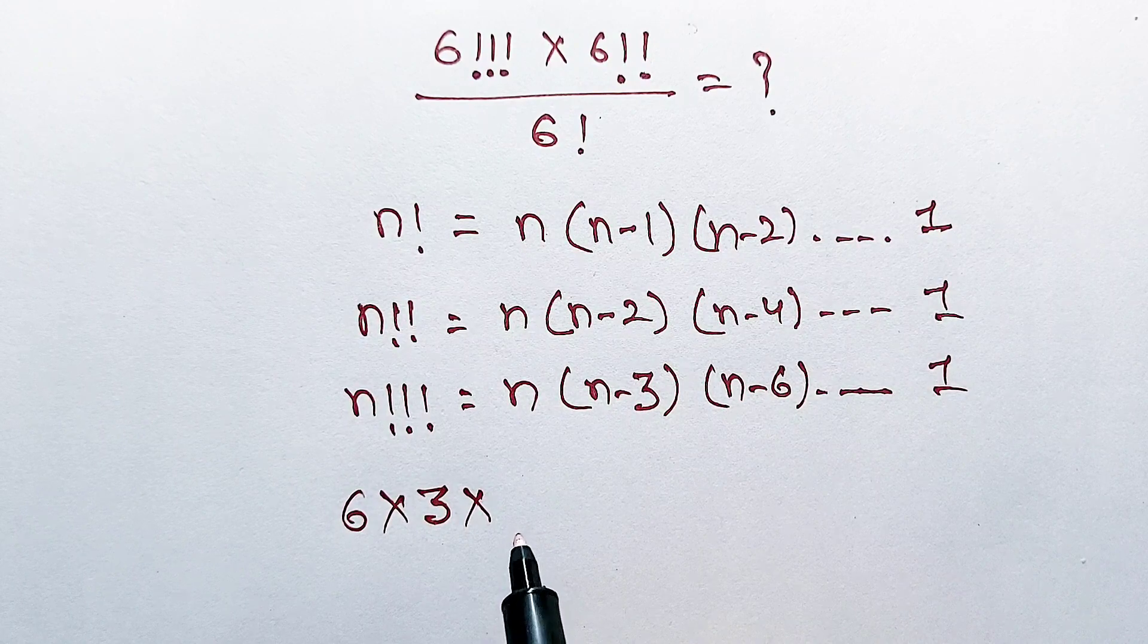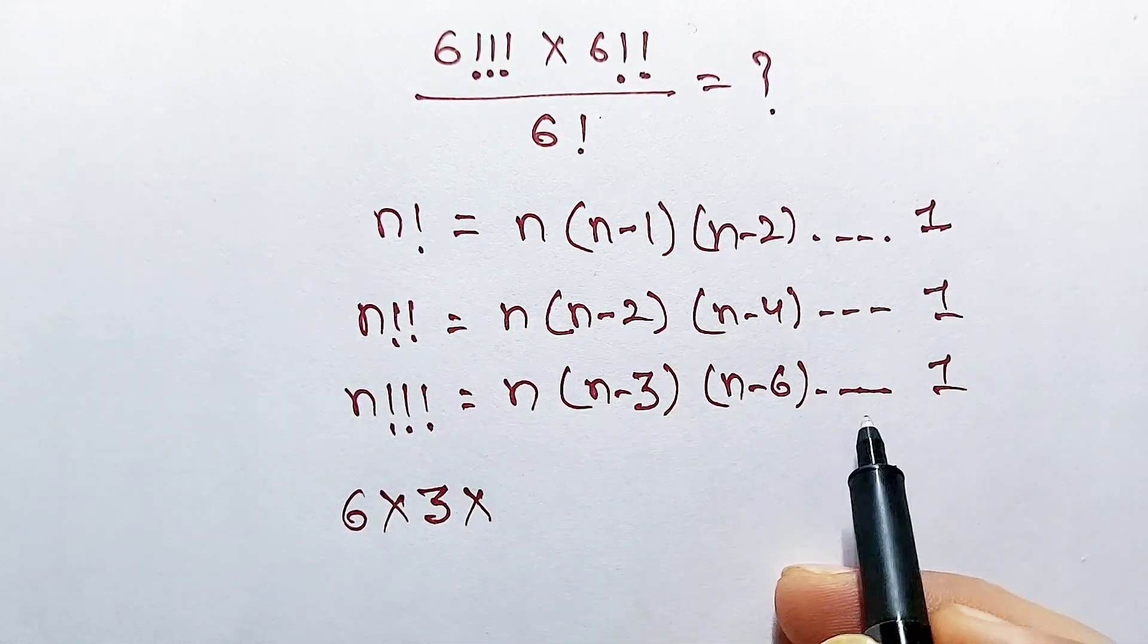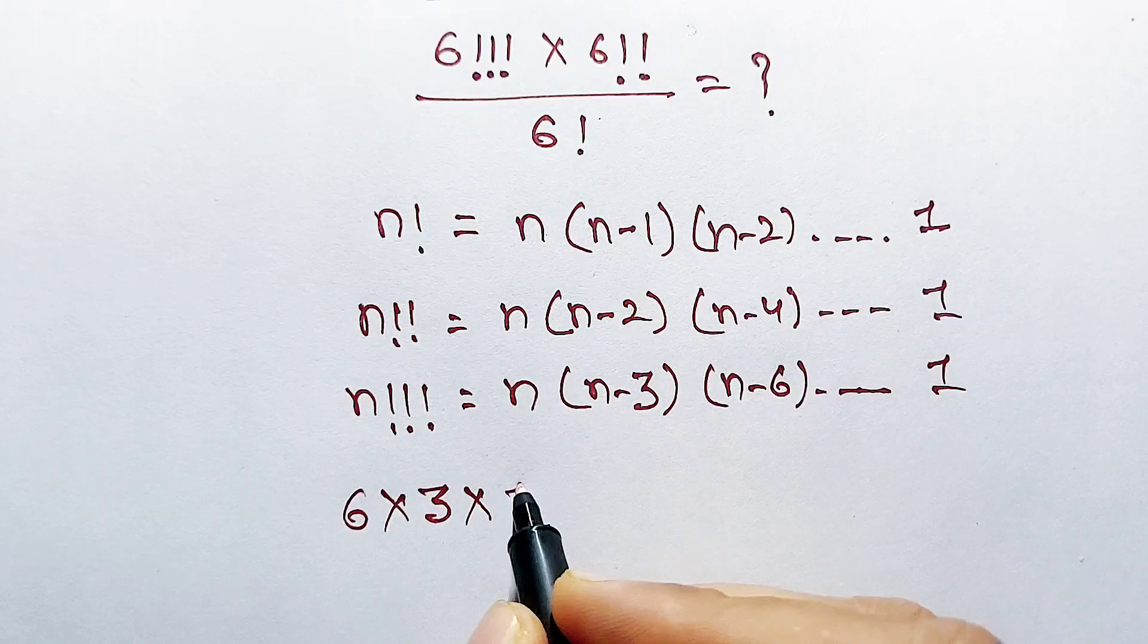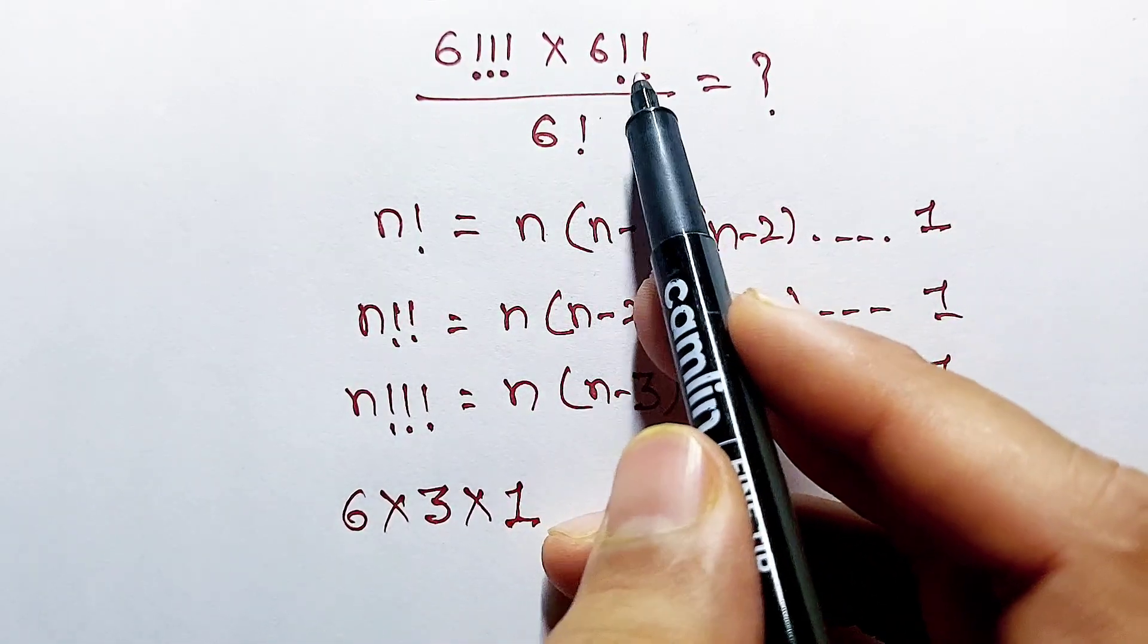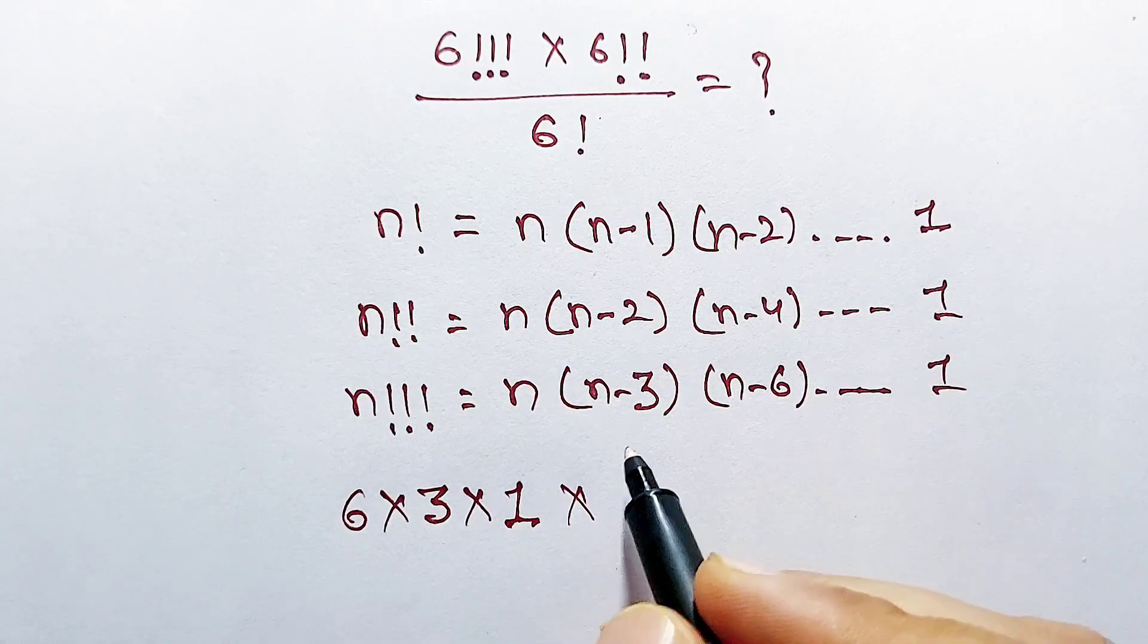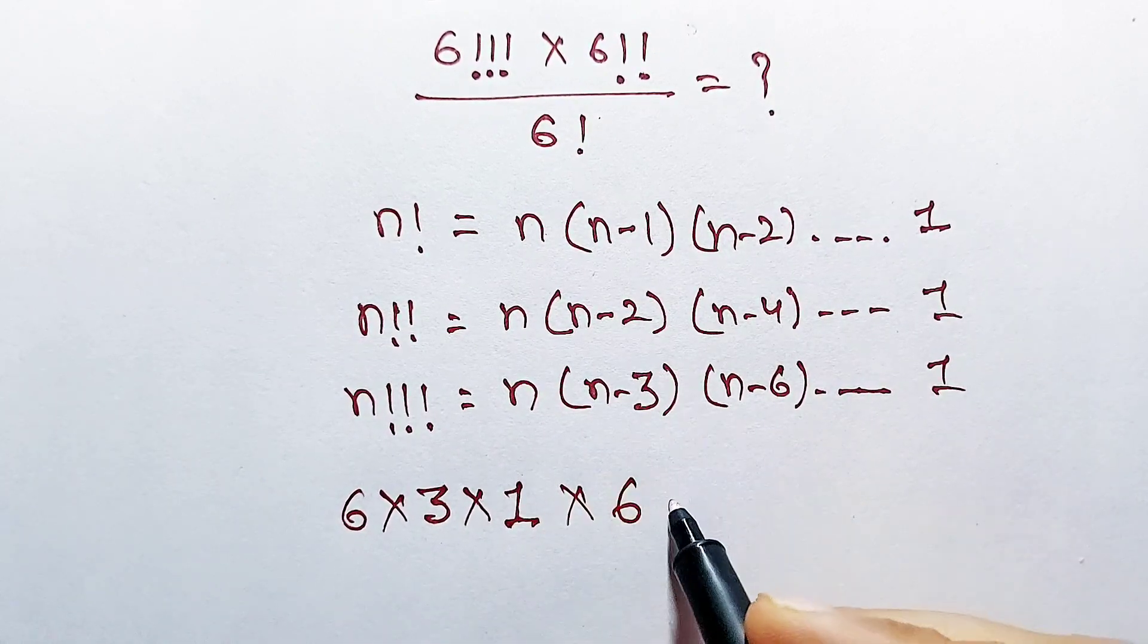But we are not writing here 0 because our last term is 1, so we write the last term as 1. Now our second term is double factorial of 6, which is equal to 6 multiplying 6 minus 2.